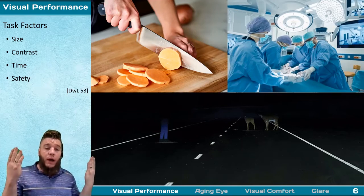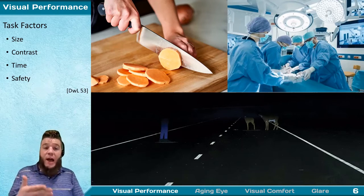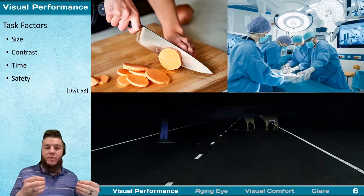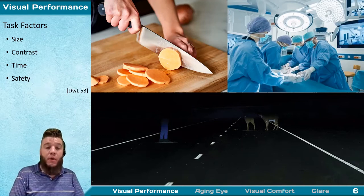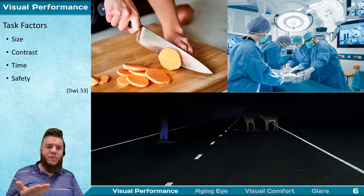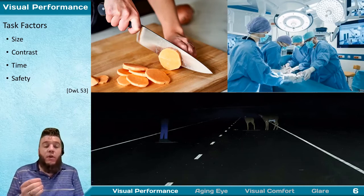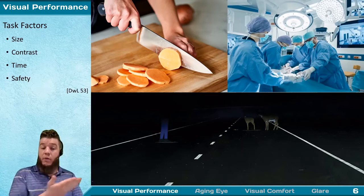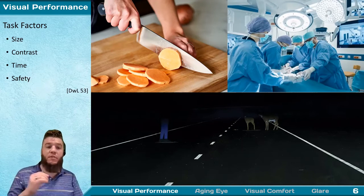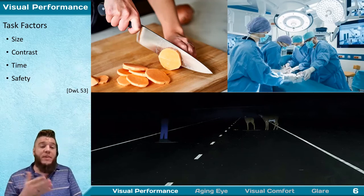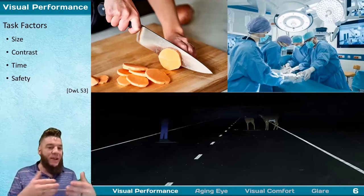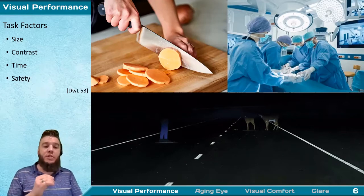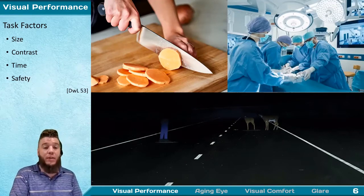To review: our key task factors of size, contrast, time, and safety are how the IES defines their illuminance and uniformity criteria in the handbook. It's important to understand the basis of that design criteria so you know when to take values at face value and when to modify the baseline — for example, when human lives are at stake, or when contrast is higher or task size is smaller than expected.